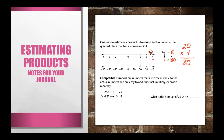The video also talked about compatible numbers. Compatible numbers are numbers that are close in value to the actual numbers and are easy to add, subtract, multiply, or divide mentally. In this example, we have 24.8 — a compatible number for that is 25. Then we have × 4.21, and a compatible number for that is 4. So now we're multiplying two easy numbers: 25 × 4, which equals 100.